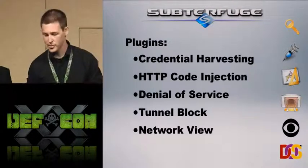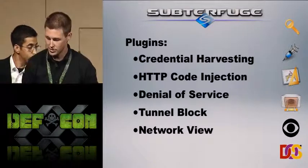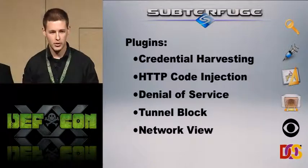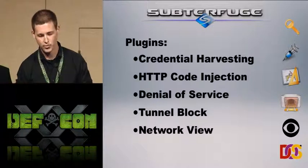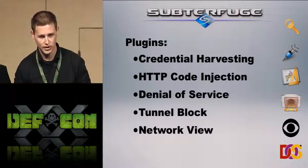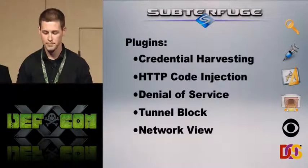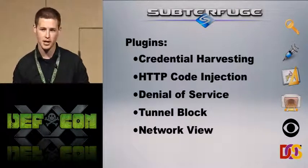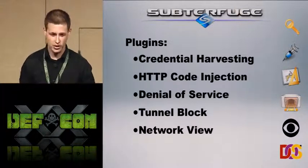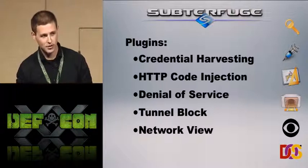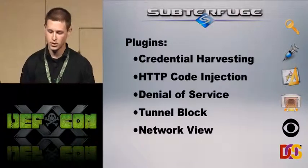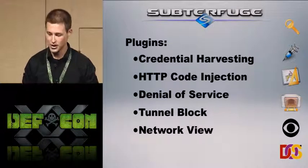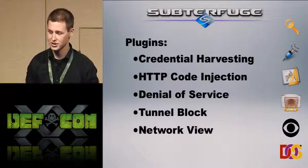Here are some of the plugins we're going to briefly talk about. The credential harvester is the main module in Subterfuge. What it does is use all the backend tools — the ARP poisoning tool we wrote, SSL strip — puts it all together in one spot, configures it without requiring any text file editing, and just works. You click start and it will start intercepting any kind of web login traffic. Code injection is where we intercept traffic going between the legitimate source and the host and slap something on.